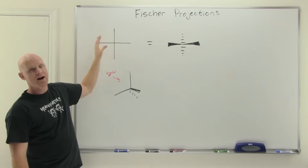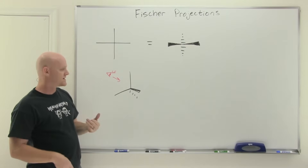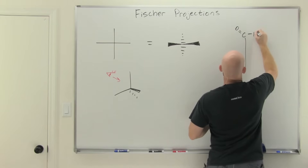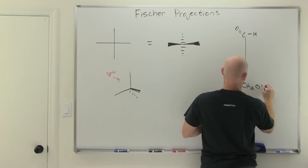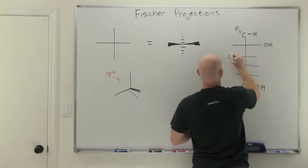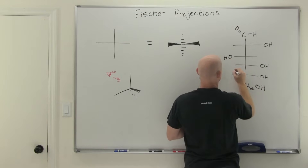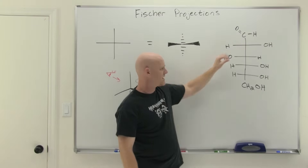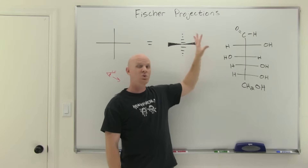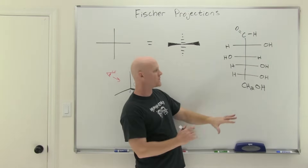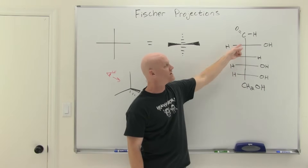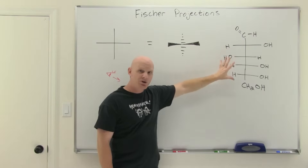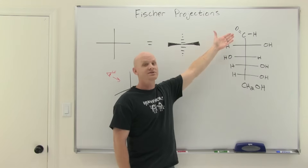With one chiral center, you'll see Fischer projections occasionally — with amino acids, for example — but it's often molecules with multiple chiral centers where we use them. A very famous example is D-glucose, which is super common in a biochemistry context and often part of sugar chemistry at the end of organic chemistry. D-glucose has four chiral centers in its structure, which is why it's often represented with Fischer projections, named after Emil Fischer who pioneered using these structures for sugar molecules.